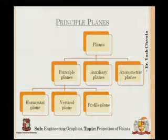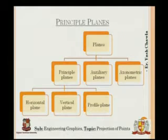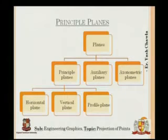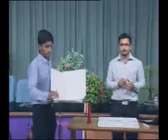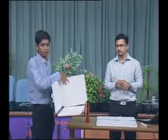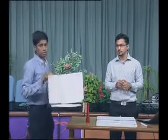For projection, we need different planes. There are three types: principal planes, auxiliary planes, and axonometric planes, and we will concentrate on principal planes first. Principal planes are divided into three parts: horizontal plane, vertical plane, and profile plane. Hardik will show a demonstration. One plane is horizontal, another is the vertical plane perpendicular to the horizontal and parallel to the wall, and the third is the profile plane, which is perpendicular to both.